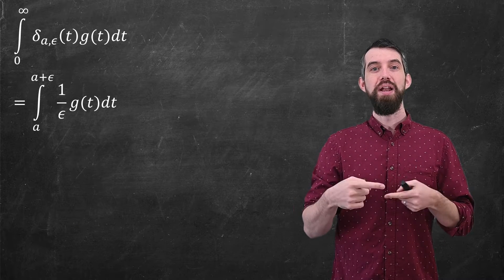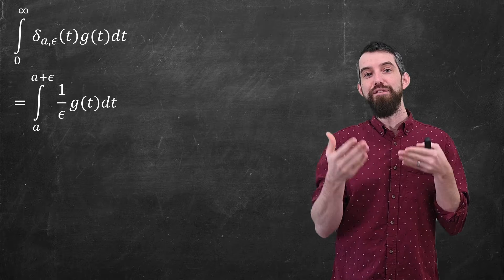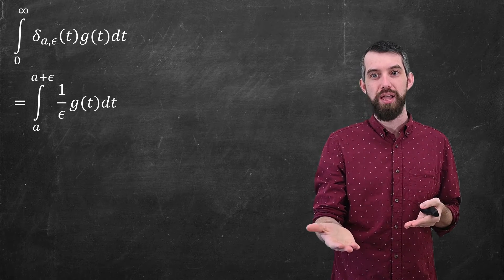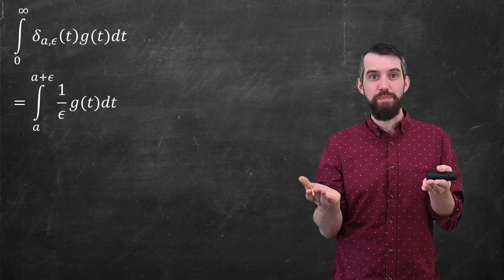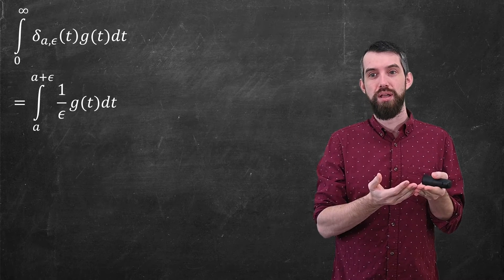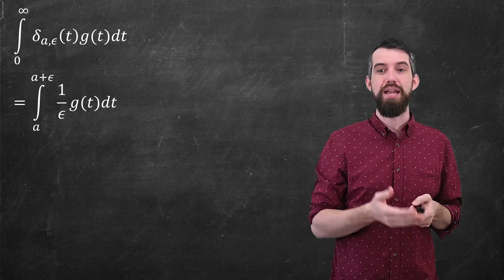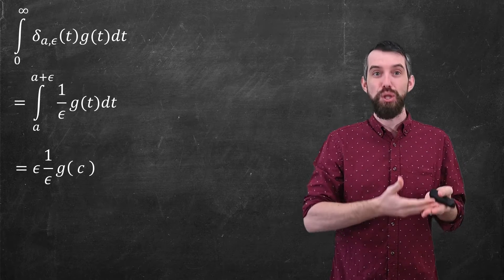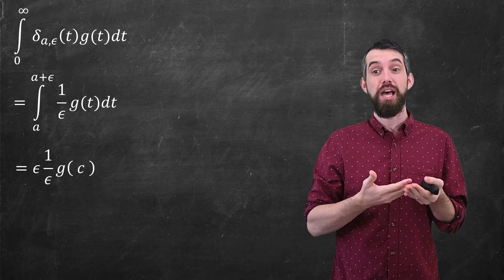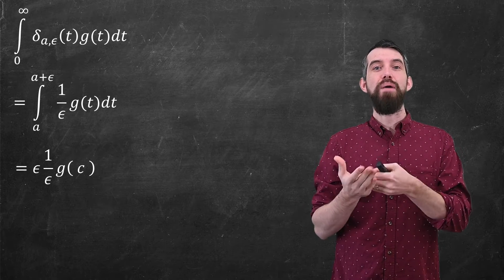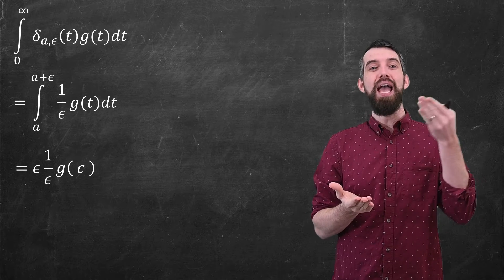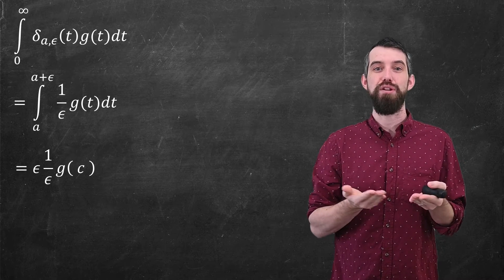Let me give some space and get rid of the picture. Well, then what is this? By the mean value theorem for integrals that we just saw, this is going to be the width of the interval, a to a plus epsilon is just a width of epsilon, multiplied by the integrand at some point. So this is epsilon times 1 over epsilon times g(c). And then what about that c? Well, the c is some value in between a and a plus epsilon.